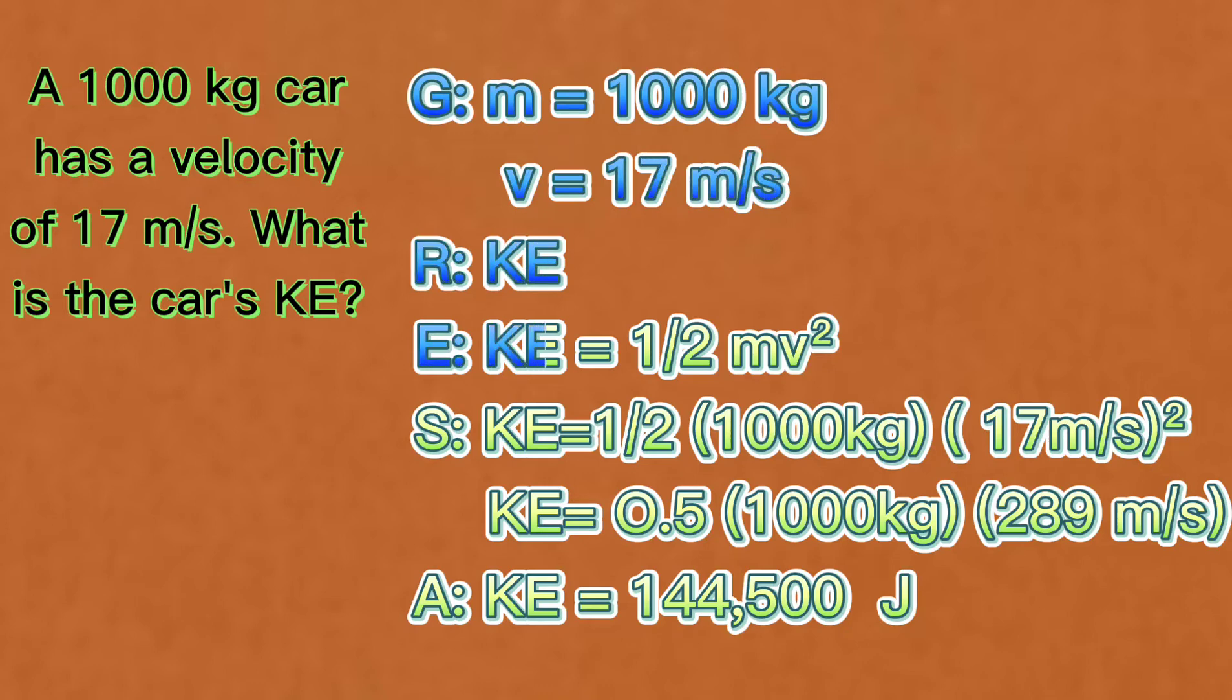Given are mass, which is 1000 kilograms, and velocity, which is 17 meters per second. Required is kinetic energy. And the equation to be applied is, kinetic energy equals 1 half times mass times velocity squared.